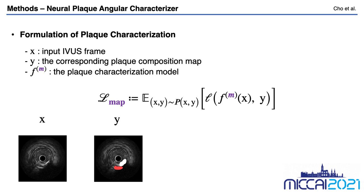Let me introduce the formulation of plaque characterization. From the data point X, which is an IVUS frame, the plaque characterization model Fm predicts the composition map at pixel level. We can estimate the performance of the model by the formula shown in this slide. The loss function is the similarity coefficient, and we can call the model a pixel-wise classifier.